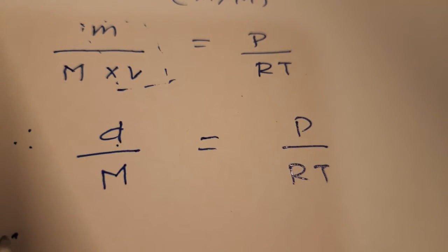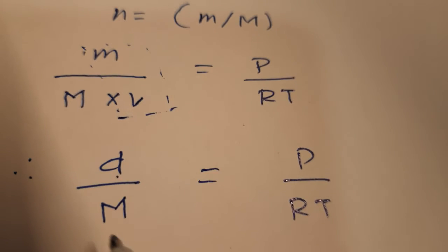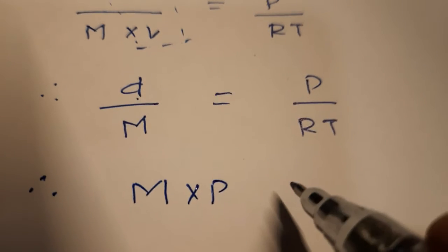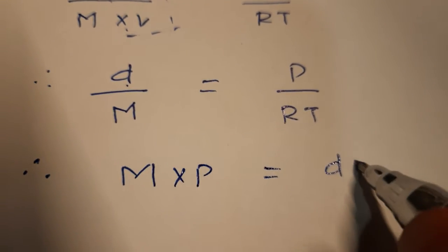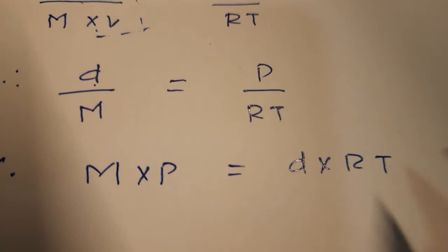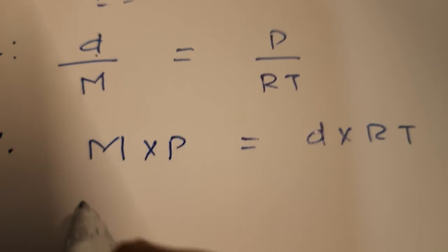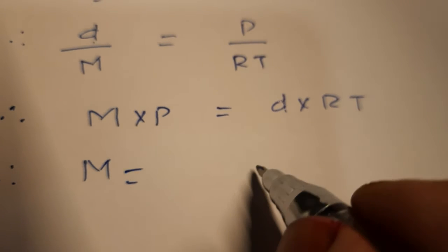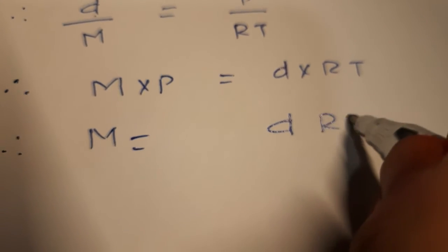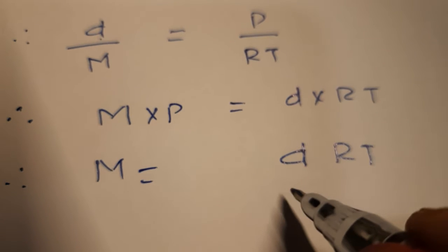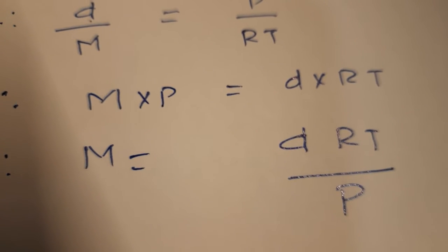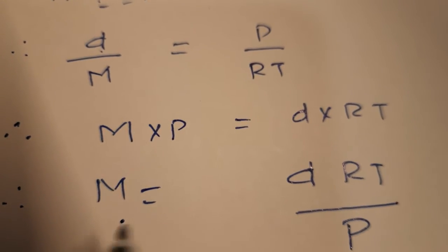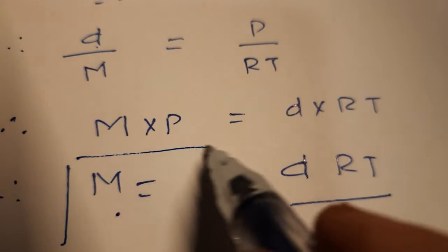We need to find the relation between density d and molar mass M. By cross multiplication, M is equal to dRT upon P. This is the relation between molar mass and density, and this formula we will use in the numericals.